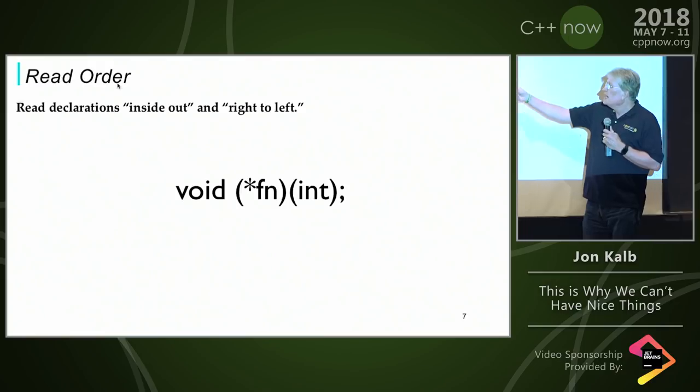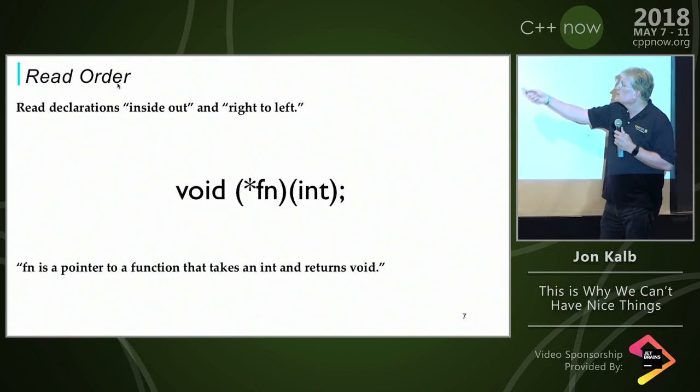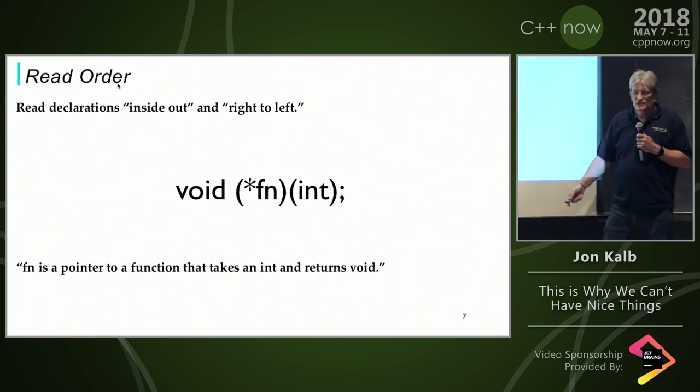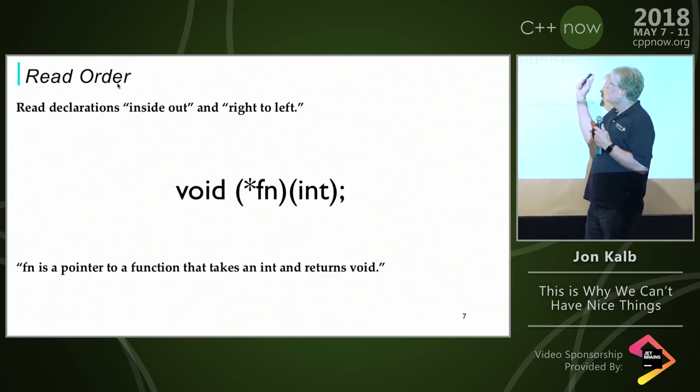Let's take a look at this. This is actually declaring fn to be a pointer to a function that takes an int and returns a void. So we're reading it inside out and right to left.